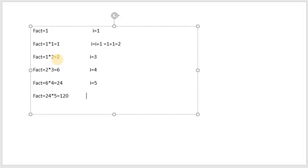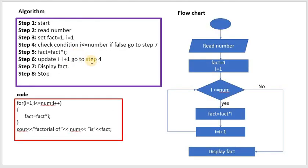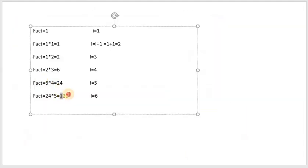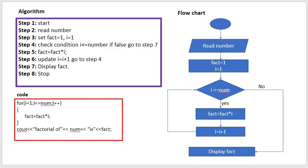Now i becomes 6. The condition at step 4 is 6 less than or equal to 5, which is false. When false, we go to step 7: display fact. What is in fact now? Fact is 120. The factorial of 5 is 120 — so our algorithm is correct. Step 8 is stop.